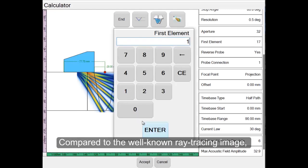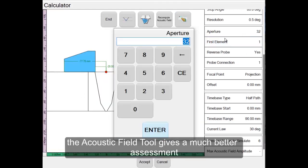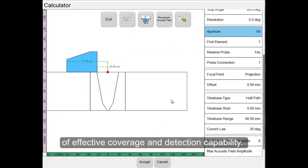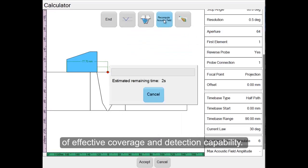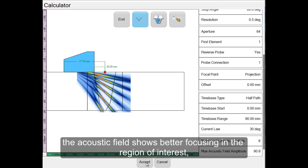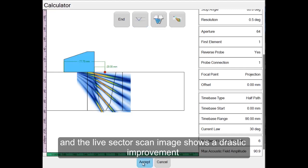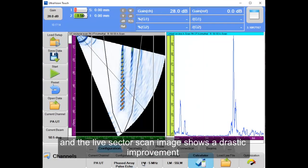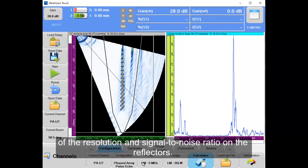Compared to the more common ray tracing image, the Acoustic Field Tool gives a much better assessment of effective coverage and detection capability. In this example, after increasing the probe aperture, the Acoustic Field shows better focusing in the region of interest and the Live Sector Scan image shows a drastic improvement of the resolution and signal-to-noise ratio on the reflectors.